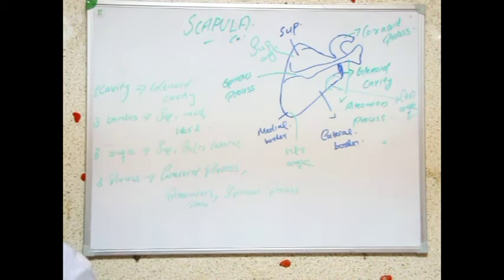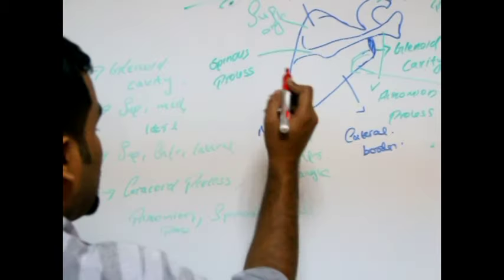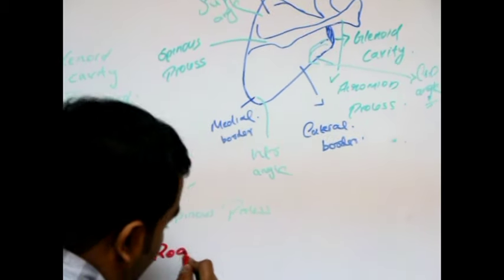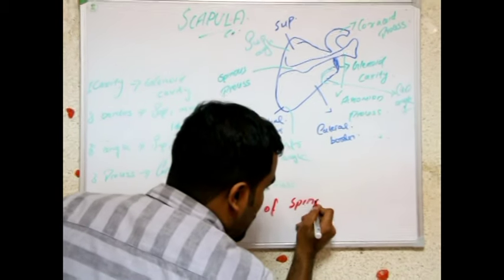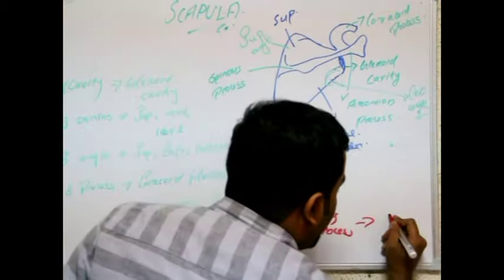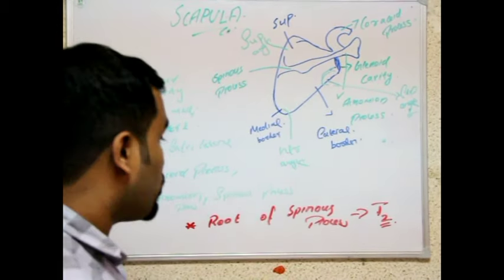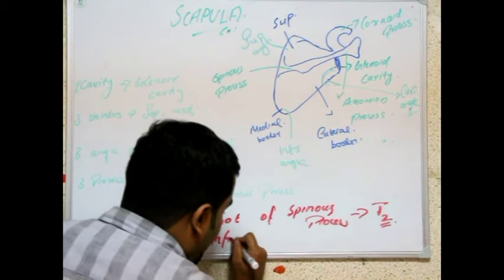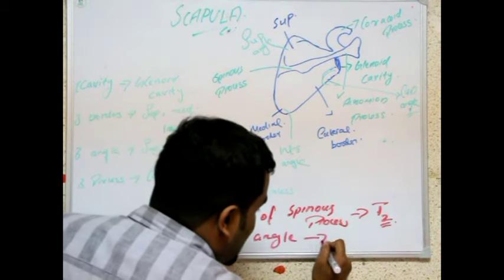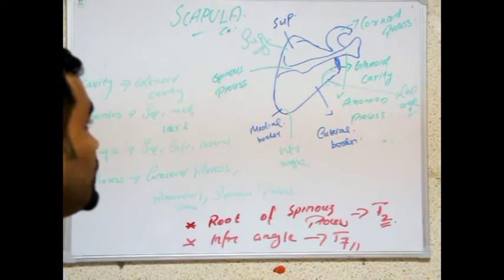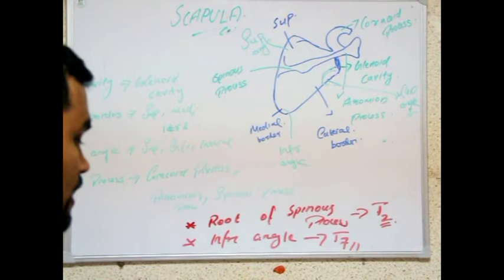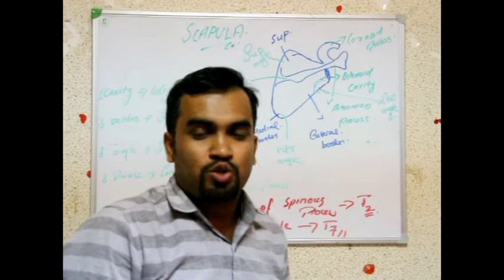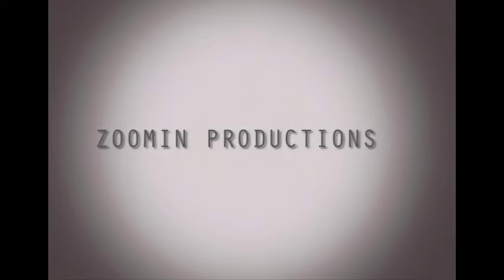A high-yield topic here: some MCQs ask about the root of the spinous process, which originates from the second thoracic vertebra (T2). The inferior angle of the scapula is at the seventh thoracic vertebra (T7). Keep all this in mind. We'll discuss this in more detail in a future class.